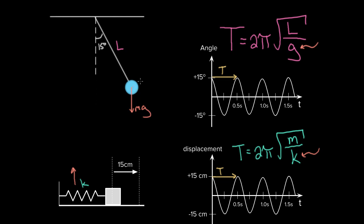If you took this pendulum to the surface of Jupiter where G is bigger, it would swing back and forth faster and take less time to complete a cycle because the restoring force is bigger. So even though the denominators are different letters, they come from the same source: both increase the restoring force, which increases the speed of the object.